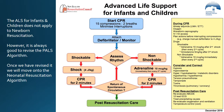If it is a non-shockable rhythm, immediately administer adrenaline 10 micrograms per kilo, then every second cycle. CPR for 2 minutes, assess for a return of spontaneous circulation, assess the rhythm — non-shockable: adrenaline 10 micrograms per kilo, CPR for 2 minutes. Continue until you have a return of spontaneous circulation, then provide post-resuscitation care.